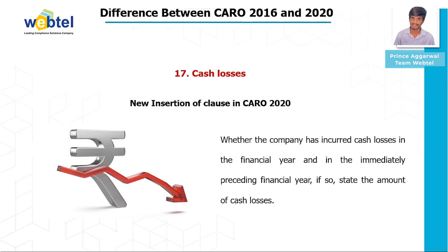Clause seventeen is Cash Losses — a new inserted clause in CARO 2020. The auditor has to ensure whether the company has incurred any cash losses in the current financial year and in the immediately preceding financial year. If so, the amount of such cash losses must be stated.